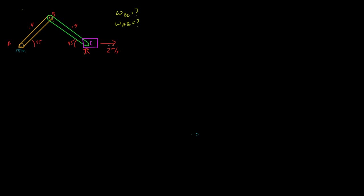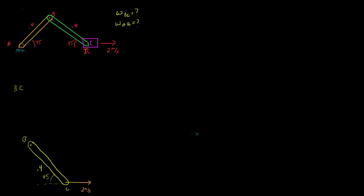Let's first look at link BC and draw a kinematic diagram. Here's BC — here's B and here's C. We know this length is 0.4 meters. This angle is 45 degrees and our velocity of C is pointing to the right at 2 meters per second. What's the velocity of B doing? Well, it's on this curved path at 45 degrees, so the velocity of B is going to be right along this link, which is also at 45 degrees.